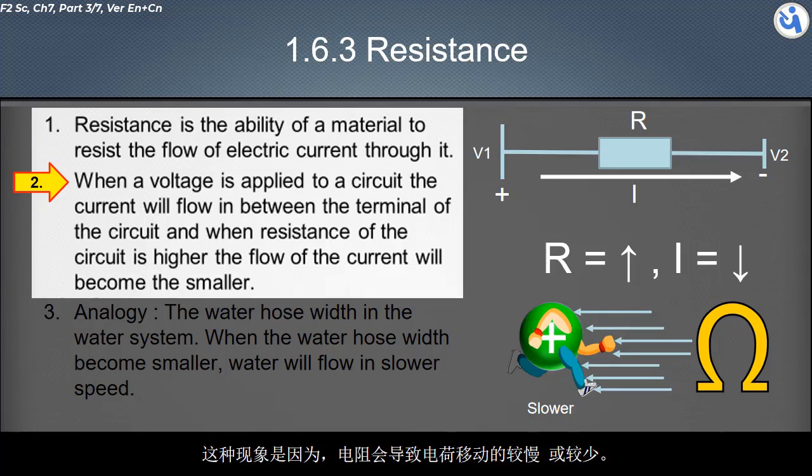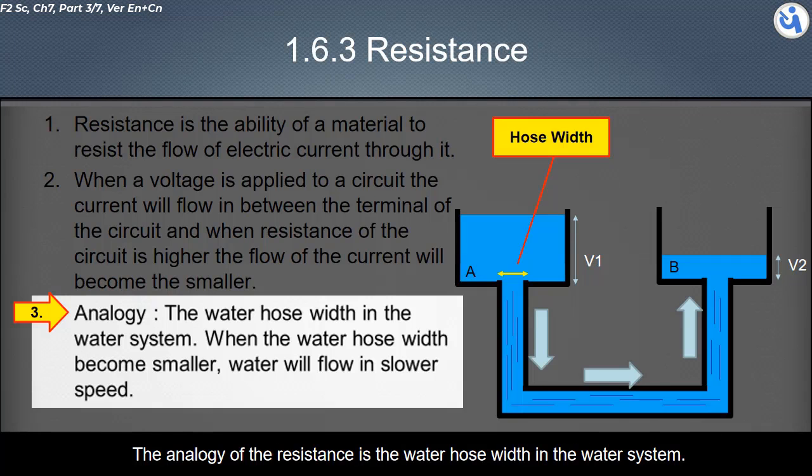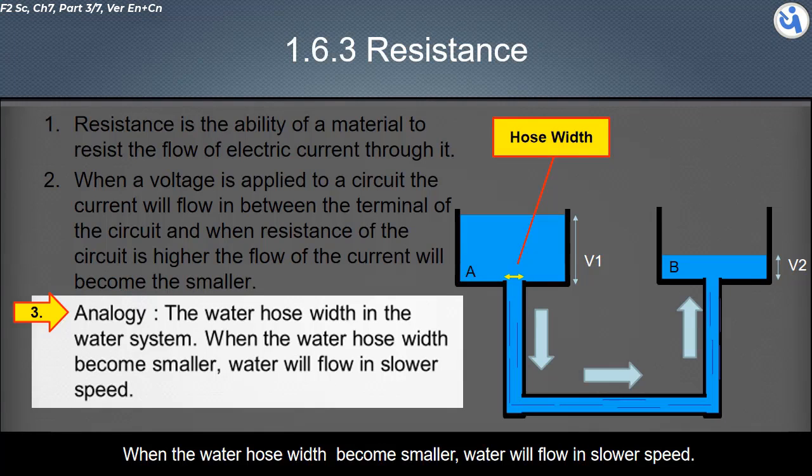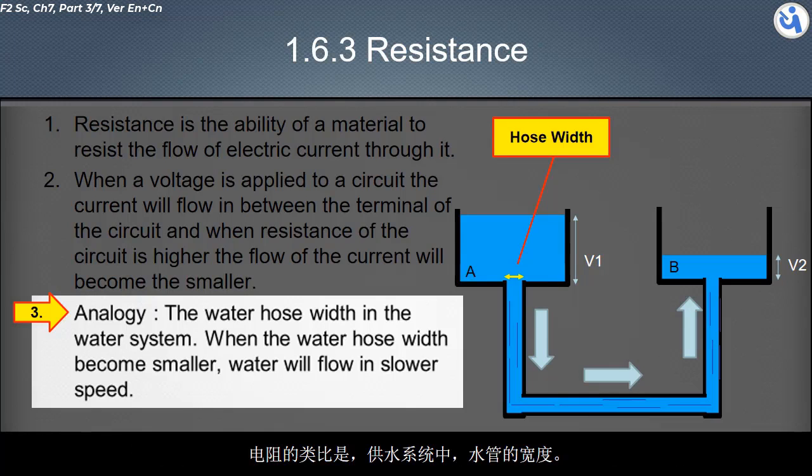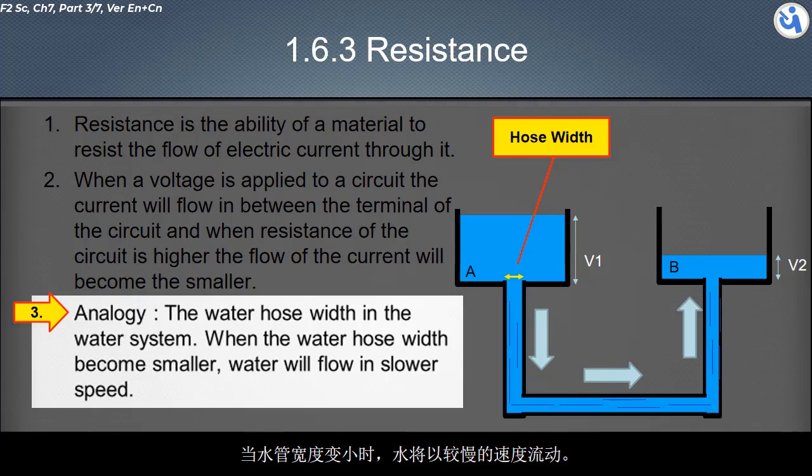The analogy of resistance is the water hose width in the water system. When the water hose width becomes smaller, water will flow at slower speed. The same amount of water will take a longer time to flow from tank A to tank B.